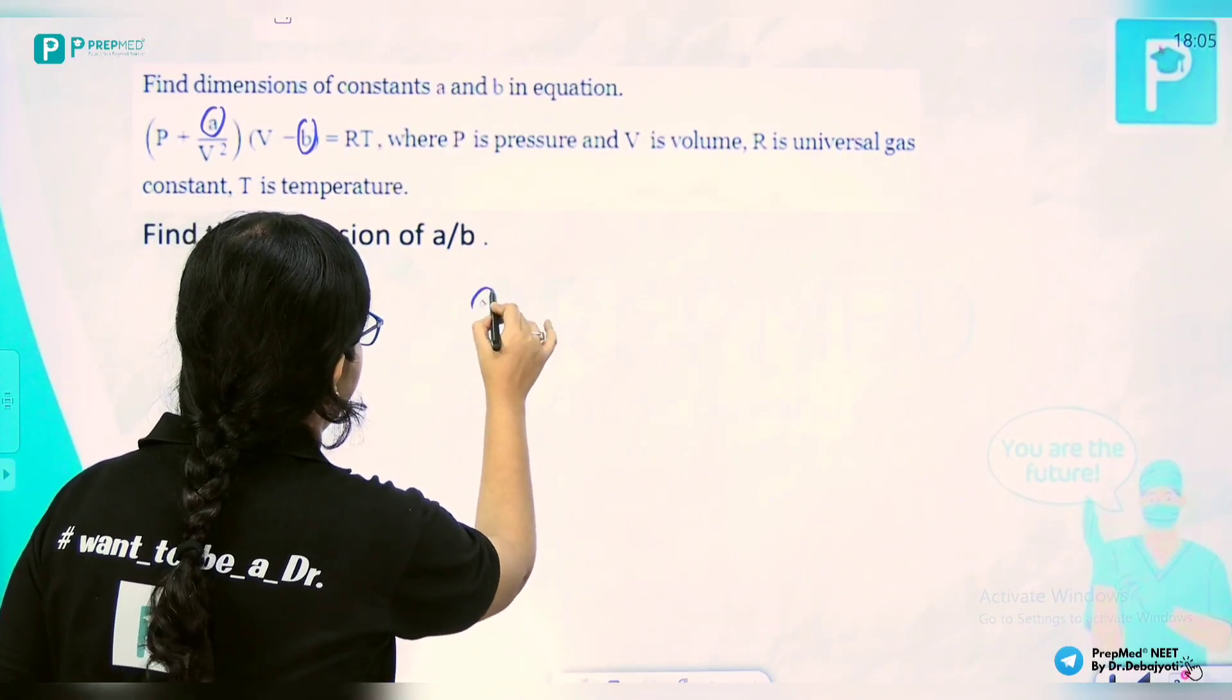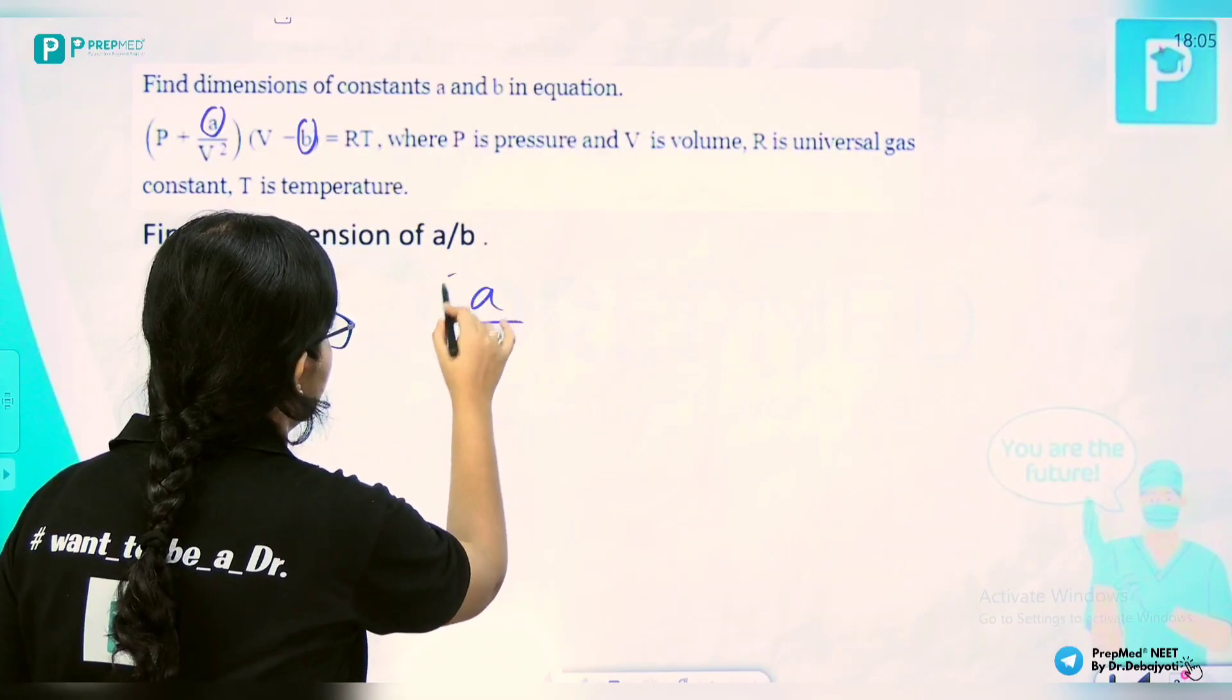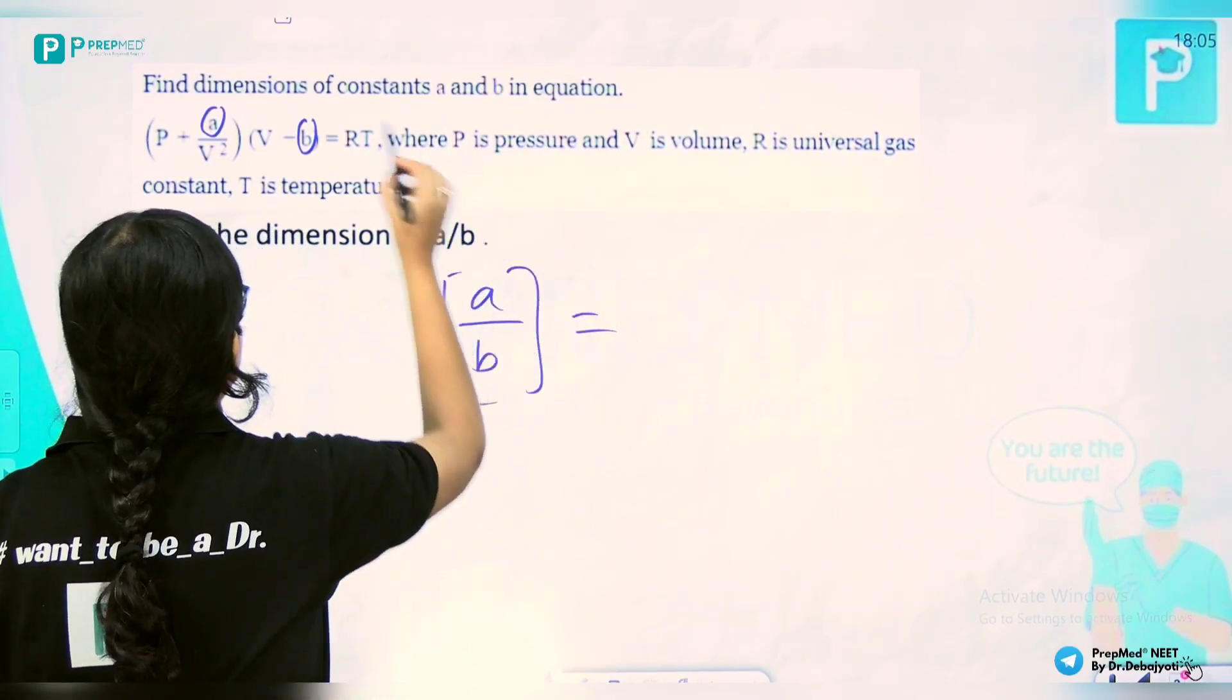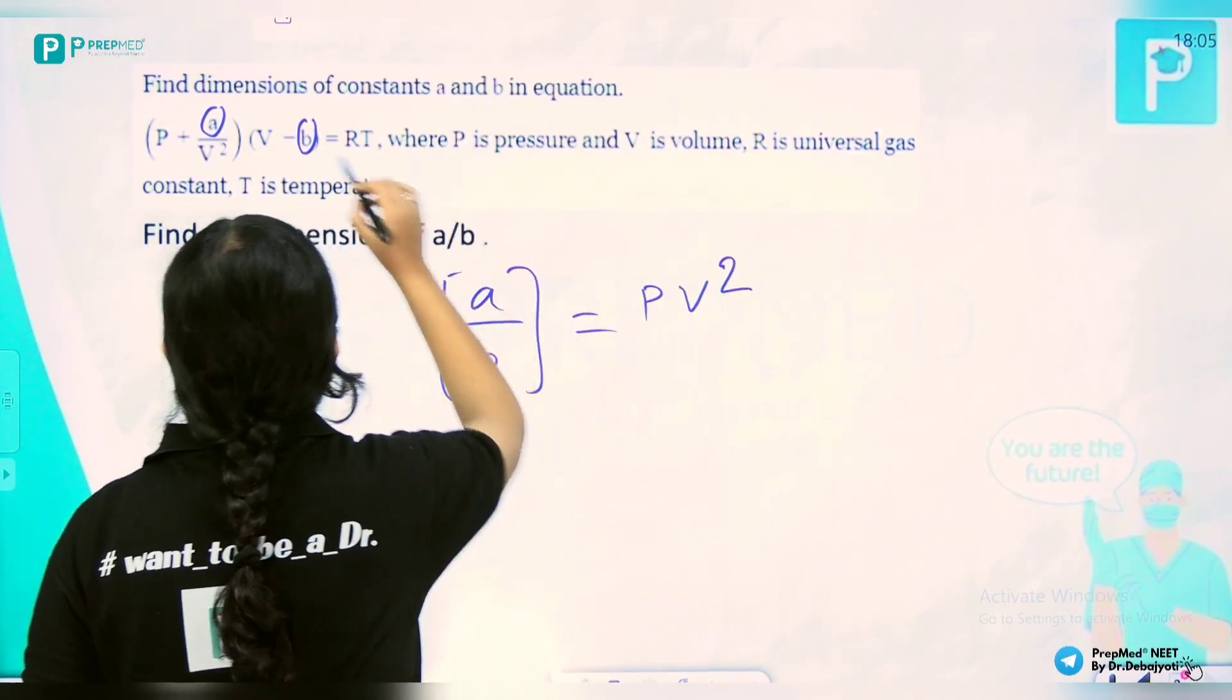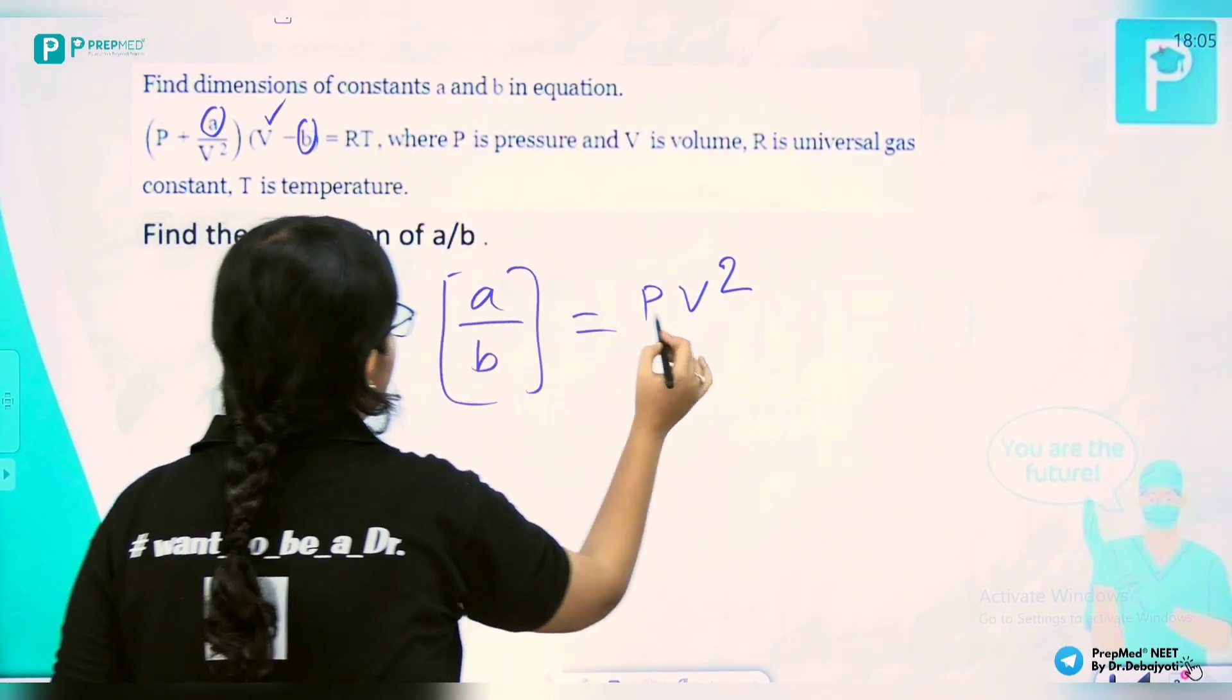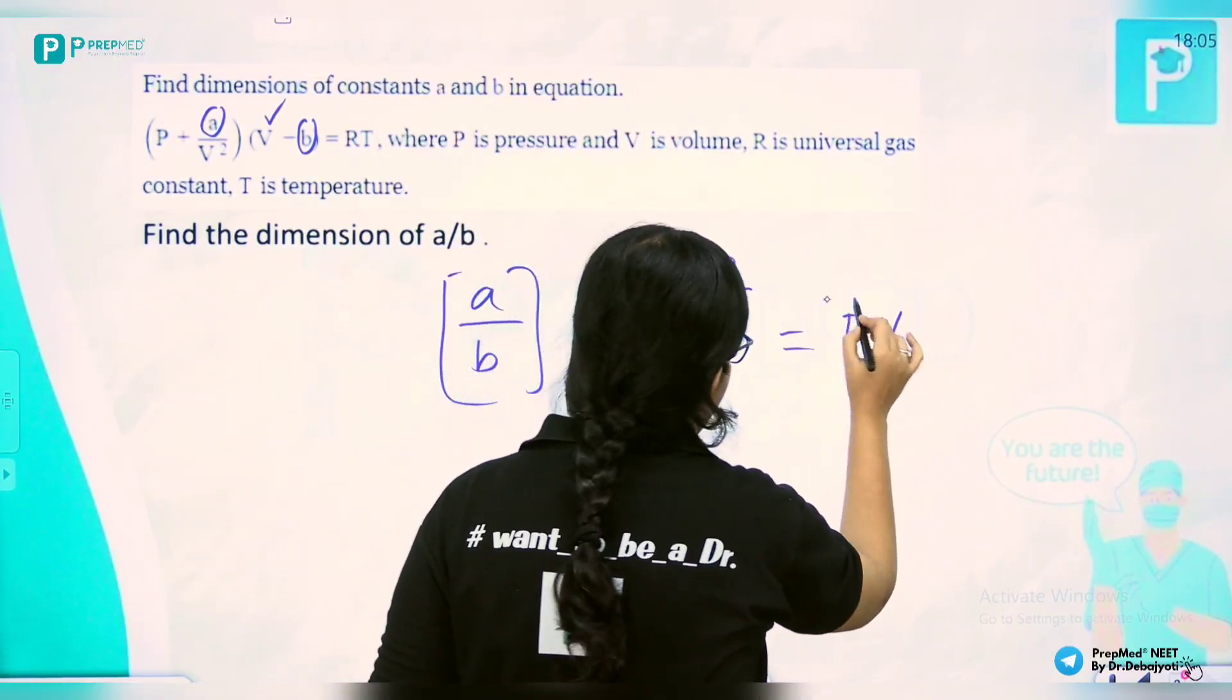and dimension of b is V. So we are getting dimension of P times V. Dimension of PV is equivalent to work done